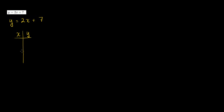So for example, if x is equal to negative 2, what is y? Well, you substitute negative 2 in: it would be 2 times negative 2 plus 7, so negative 4 plus 7, which equals 3. If x is equal to 0, then y is going to be equal to 2 times 0 plus 7, which equals 7.